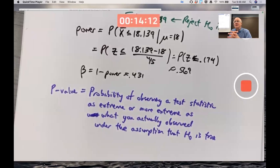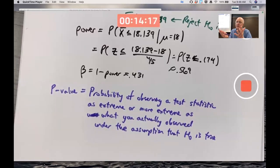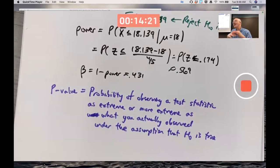If the p-value is really small, then you have observed something rare when the null is true. Therefore, we think the null is false. Don't ever think that the p-value is the probability that the null is true.